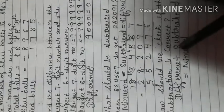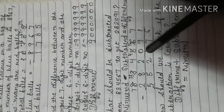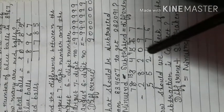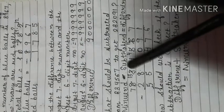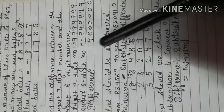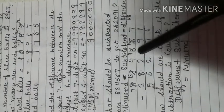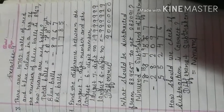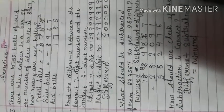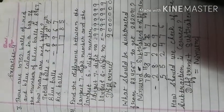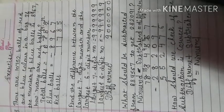To check our answer here: add 5,52,476 plus 2,82,091, and after adding these two numbers you get the minuend, which is 8,34,567. I hope all these questions are clear. I will send the remaining questions of this exercise — attempt them, write neatly with proper digit formations, and send back your answers. Thank you.